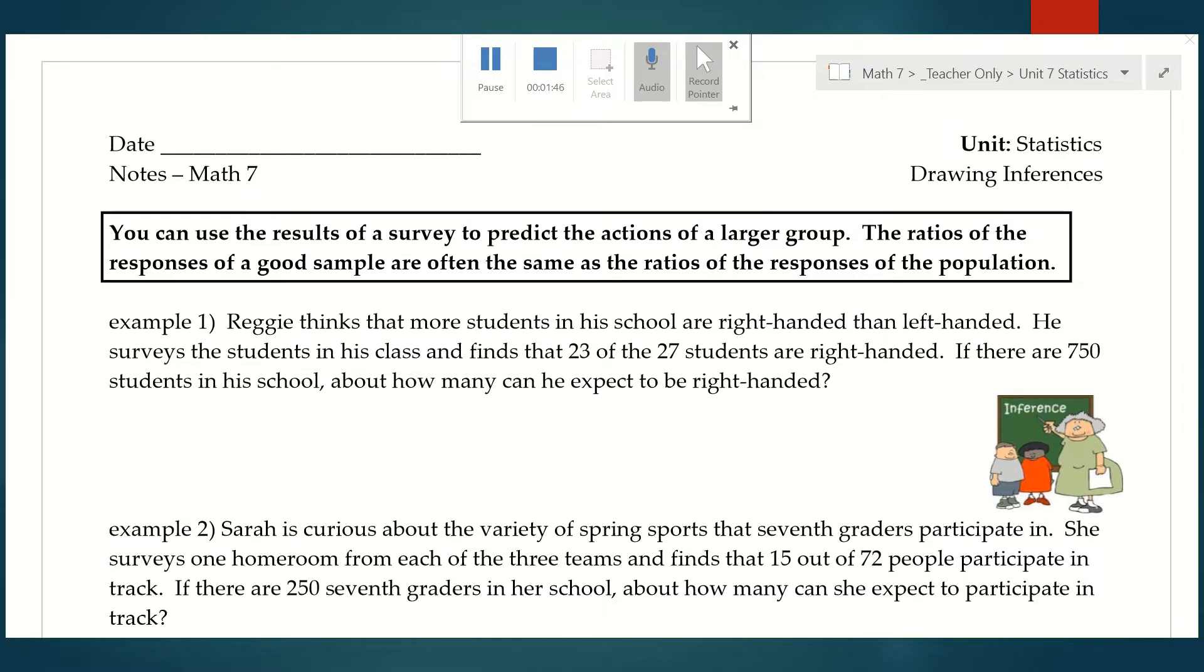The way we're going to do this is we're actually going to be setting up a proportion, which we've done many times in our past units. Think of the results of the survey. We're trying to figure out how many people are right-handed, and in the survey it says 23 out of 27 students are right-handed. We're going to start our proportion almost as if it's a part over a whole question. 23 are right-handed out of the 27 total that were surveyed.